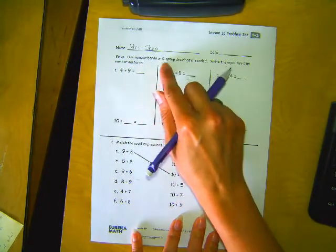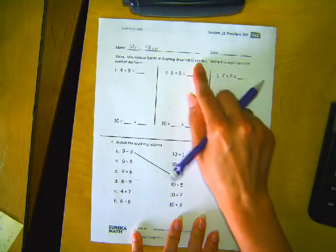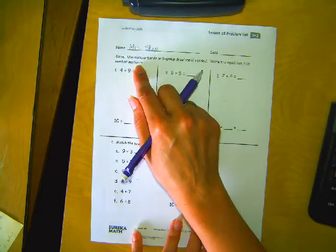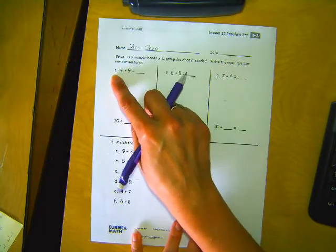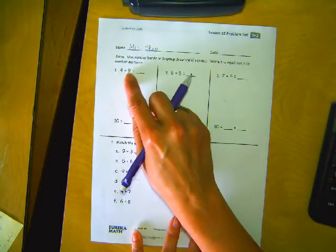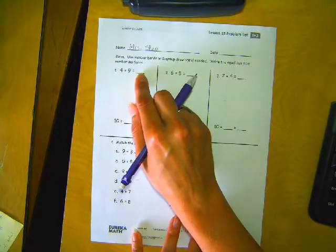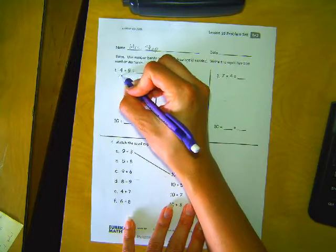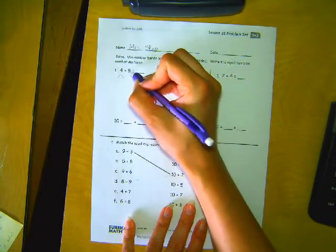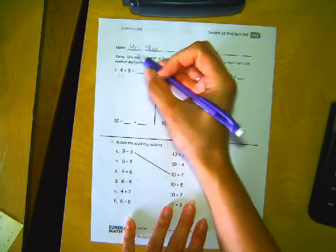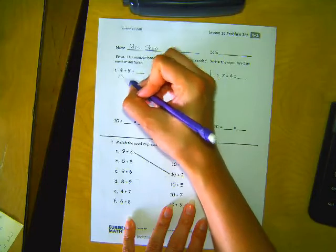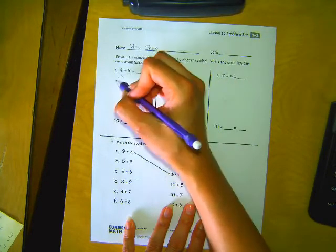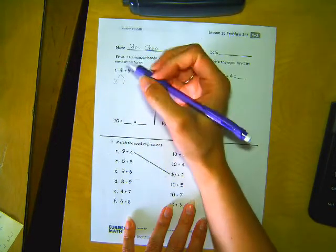Solve. Use number bonds or five group drawings if needed. Write the equal ten plus number sentence. Here we go. Number one. We have 4 plus 9 equals blank. So to use a number bond we're going to break this 4 up to help this 9 be a ten. 9 is one away from ten so we're going to take one away from 4 which means we have three left.